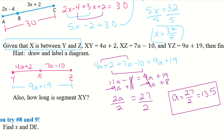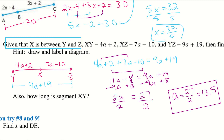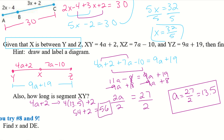Now I also want to know how long segment XY is. XY equals 4A plus 2, and I just found A equals 13.5, so I can plug that in: 4 times 13.5 plus 2 equals 54 plus 2, which gives XY equals 56.